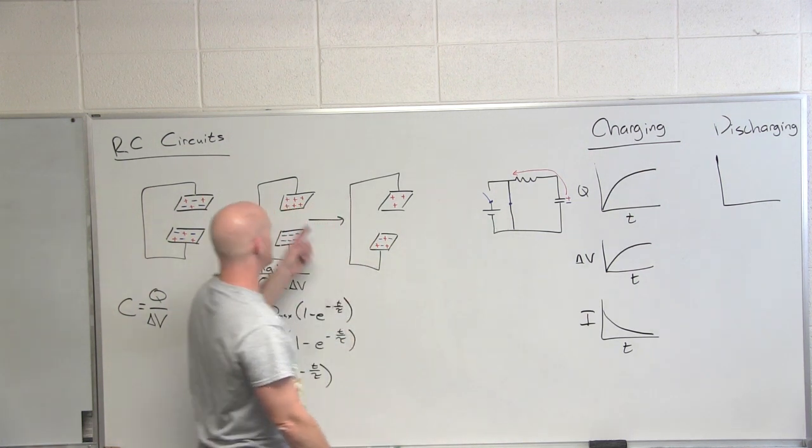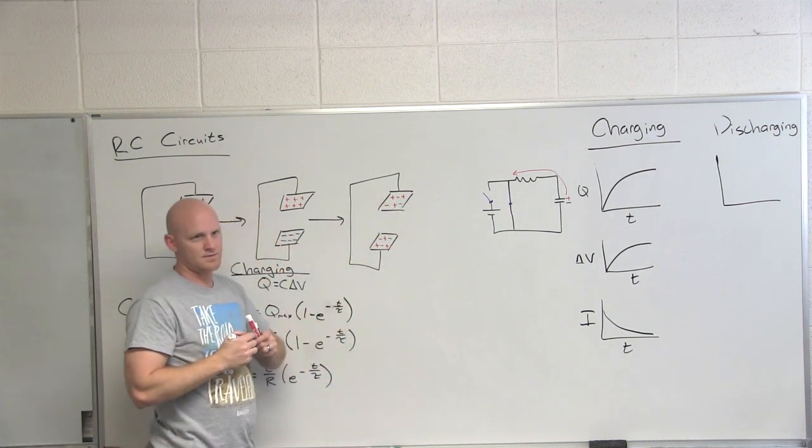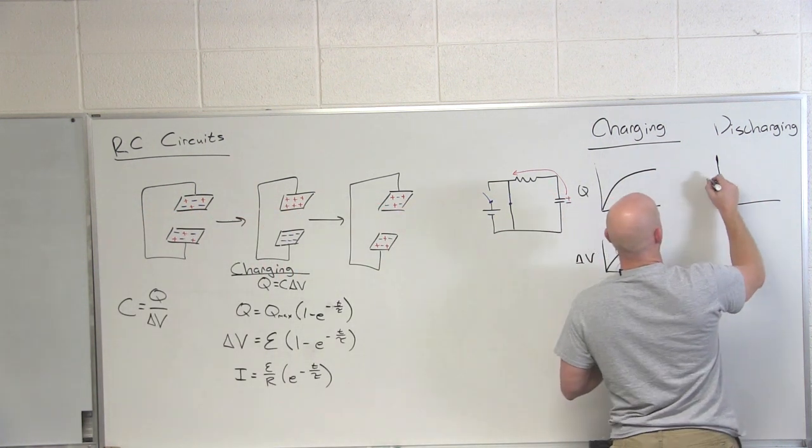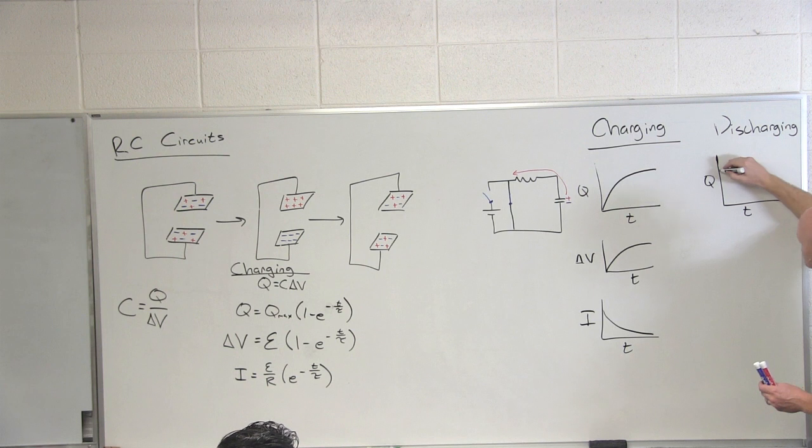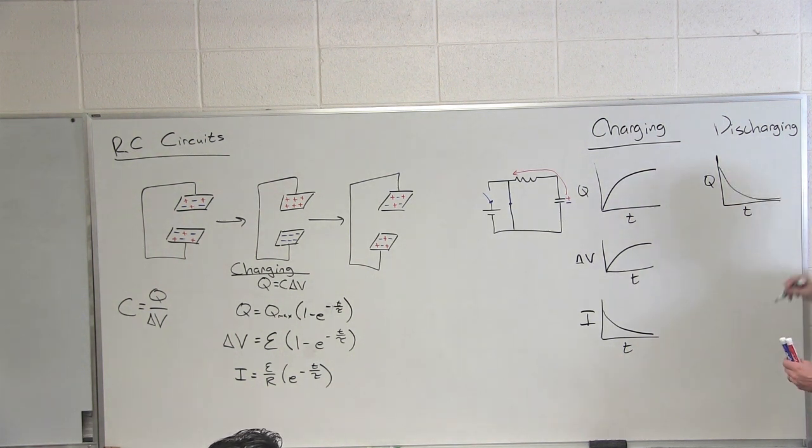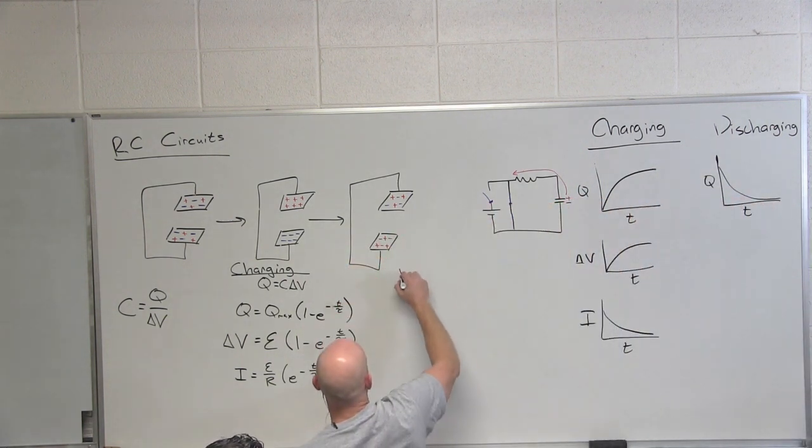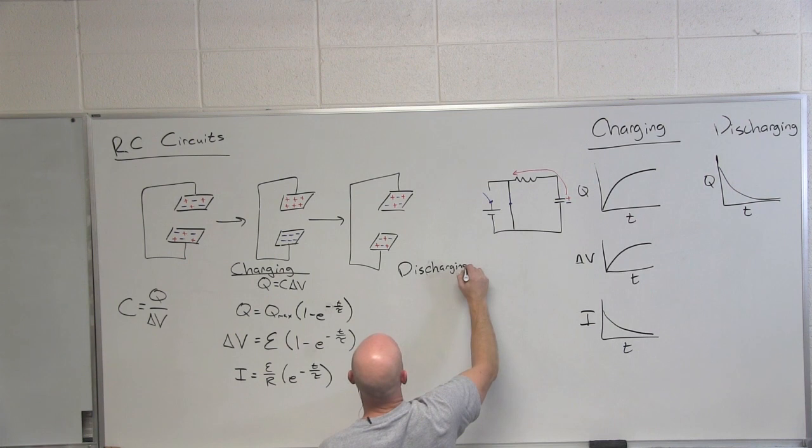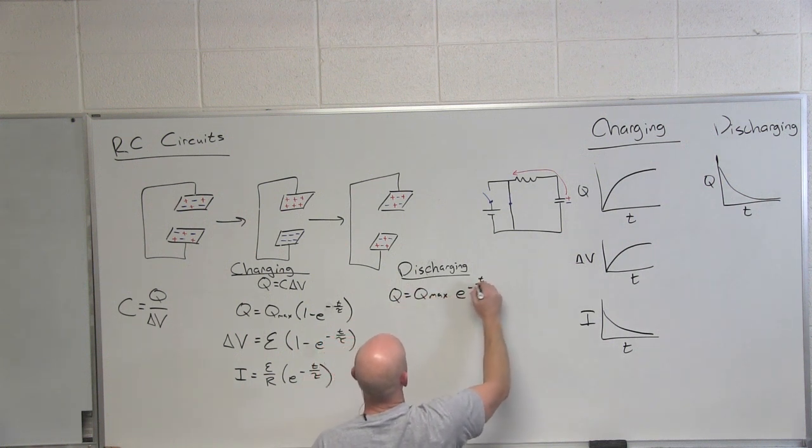And so during discharge you're going from a charge state to an uncharged state on your plates. And so if we do a plot of charge versus time what should this look like? Exponential decay. So now it starts at the max and goes down to zero. So you're starting at the max you reached just a second ago and going down to zero. And so what would that equation look like? So we just learned that exponential decay looks like this e to the negative whatever. And so in this case q would equal q max times e to the negative t over tau.